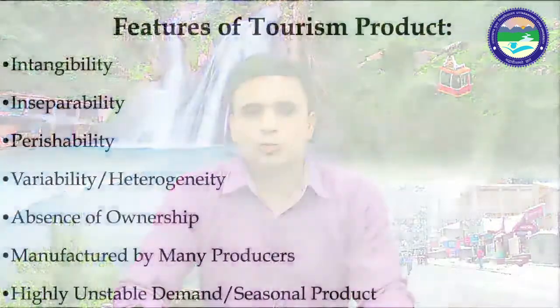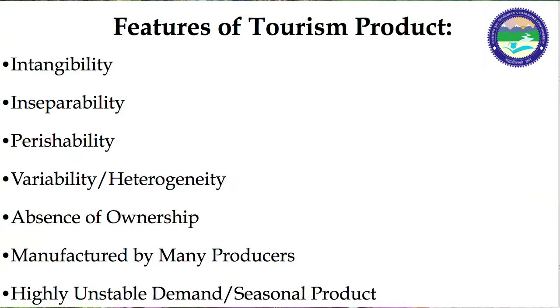Now we will understand about the features of tourism product. There are many features: intangibility, inseparability, perishability, variability or heterogeneity, absence of ownership, manufactured by many producers, and highly unstable demand or seasonal product. We will now understand each feature in a descriptive way.